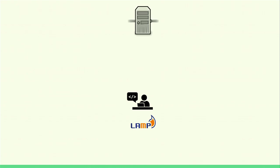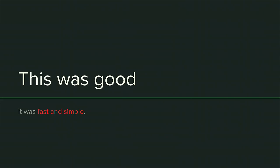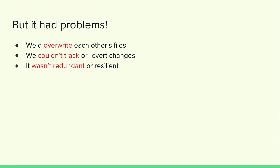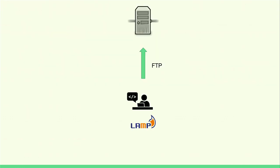We're going to start with a walk down memory lane and talk about what web development used to be like 10 years ago. In the beginning, there was the web developer, and the web developer had a LAMP stack, and then there was a server somewhere, and we put files on the server using FTP. It was fast and it was simple, but it had a lot of problems. We'd overwrite files — crazy things like index.php, index.php1, index.php.final.bak. We'd delete each other's changes, it wasn't redundant, it wasn't resilient, and if that server went down, you know, not everyone has a copy of the whole site.